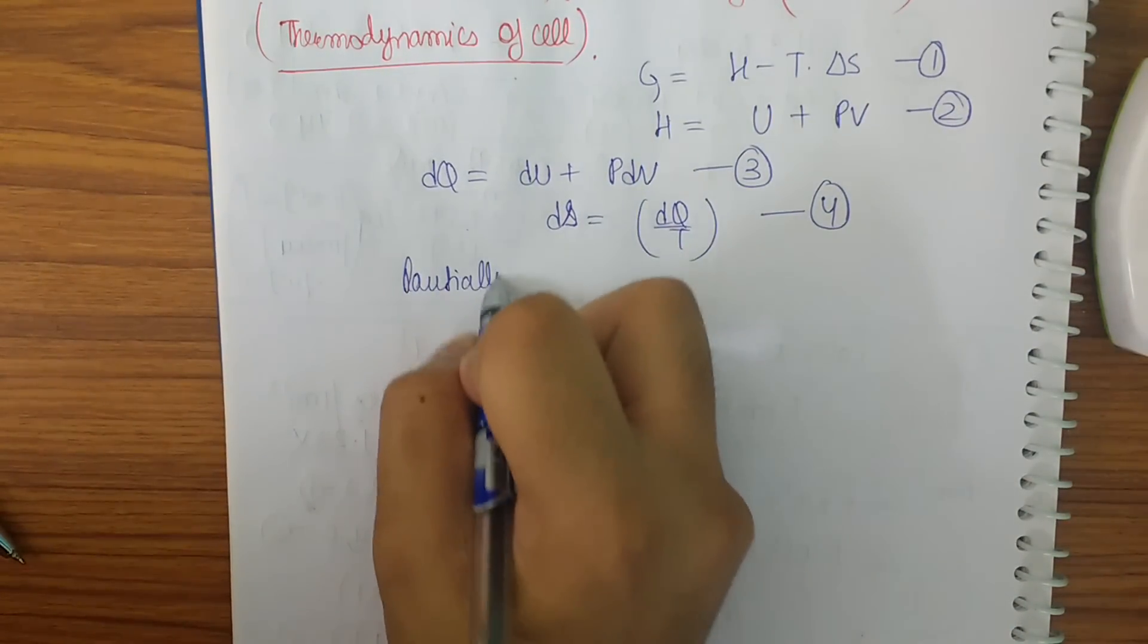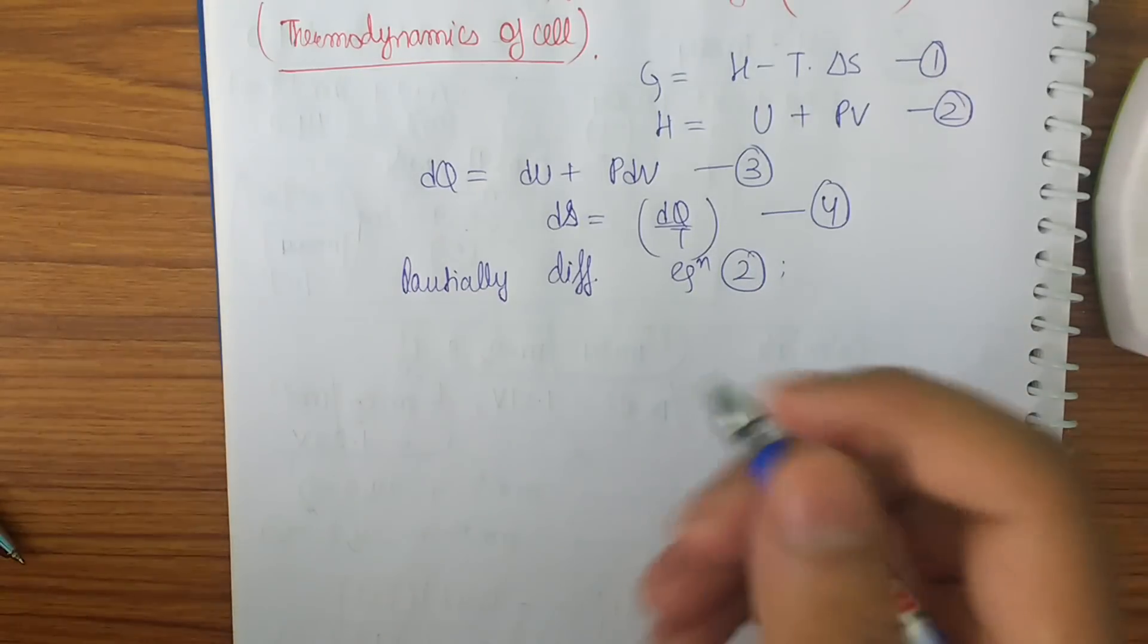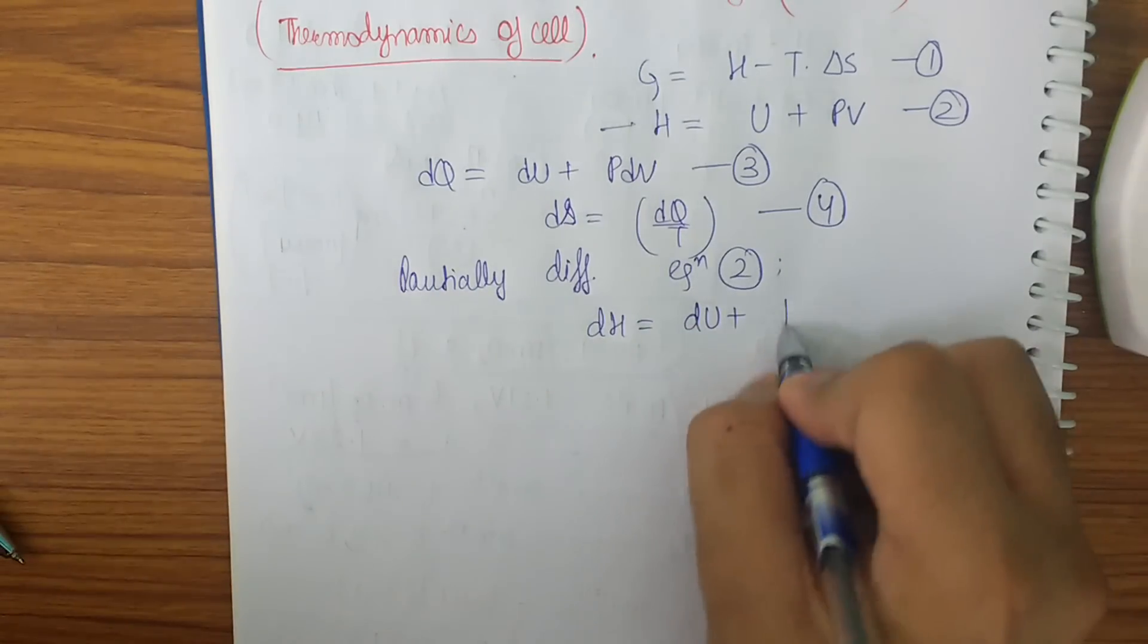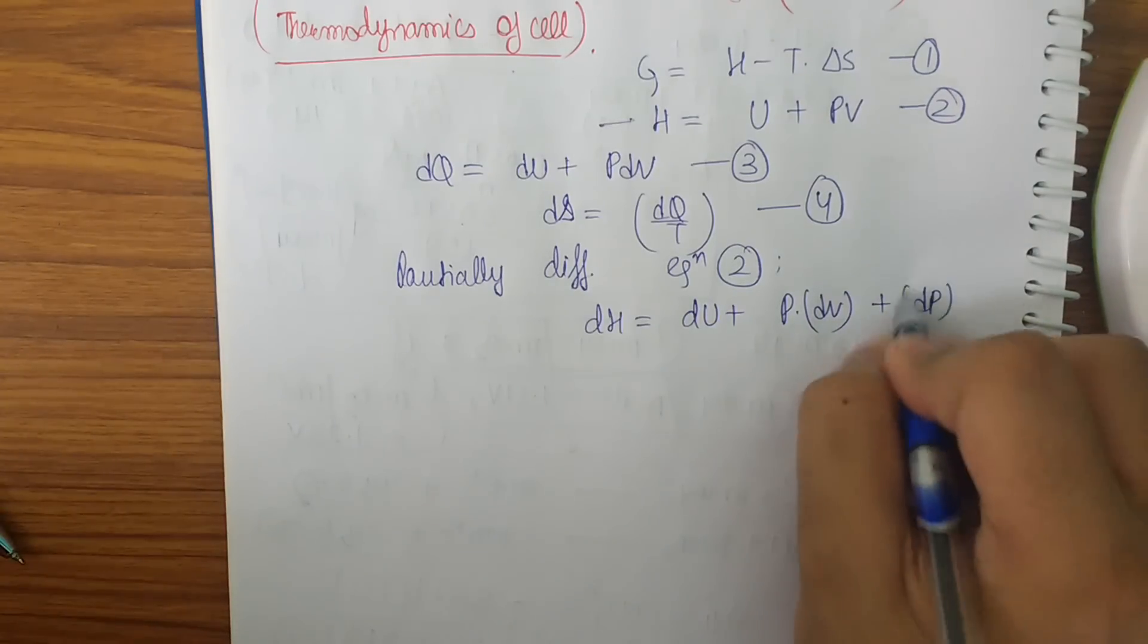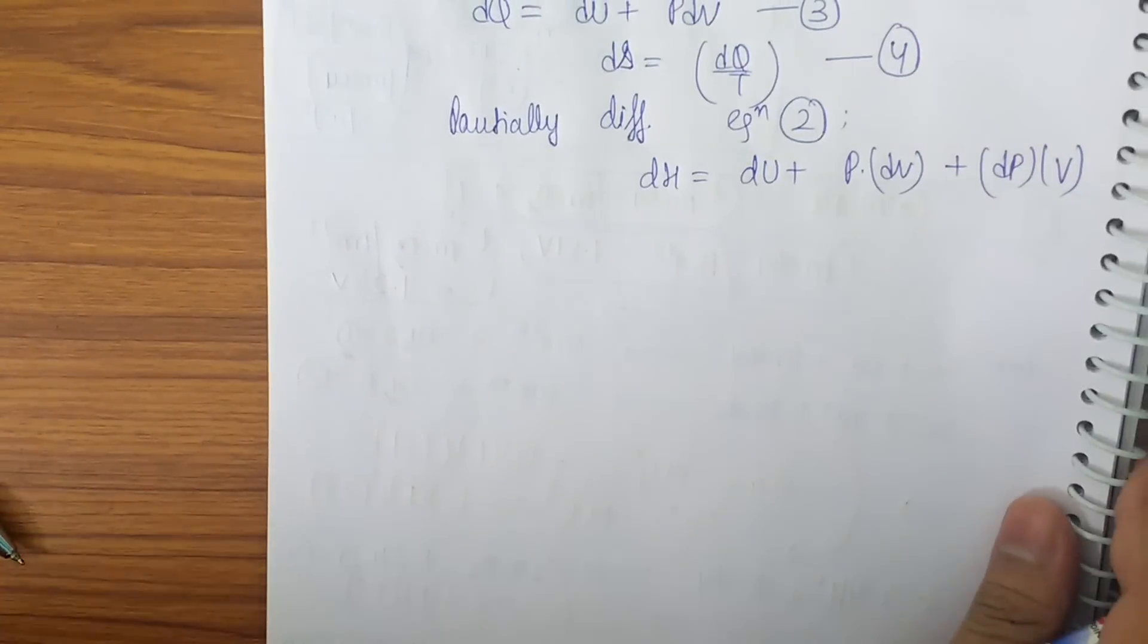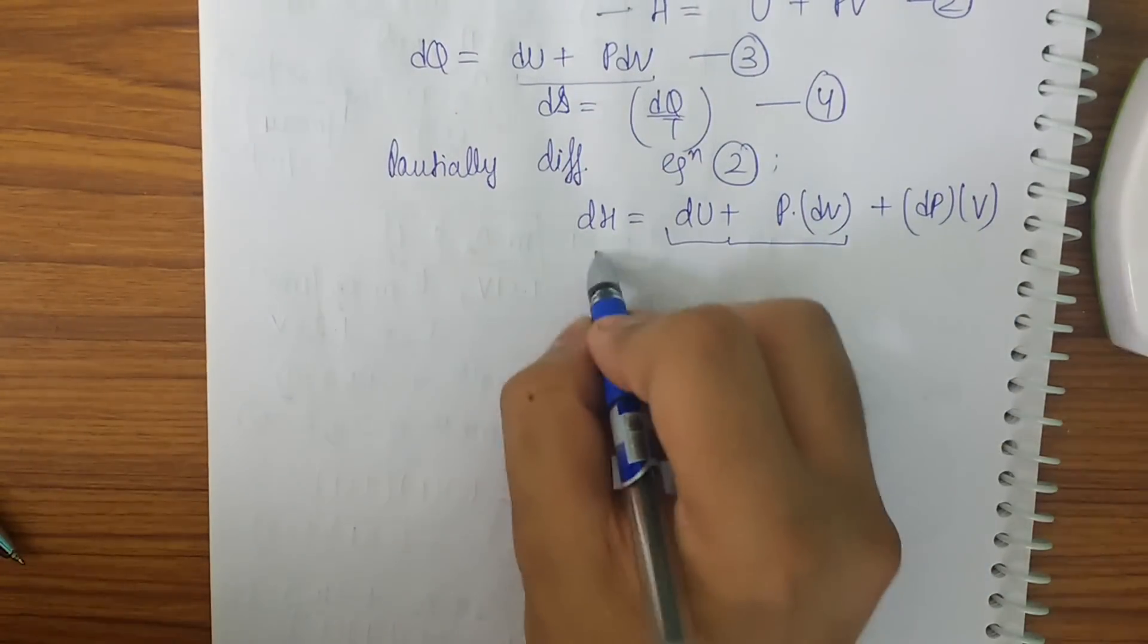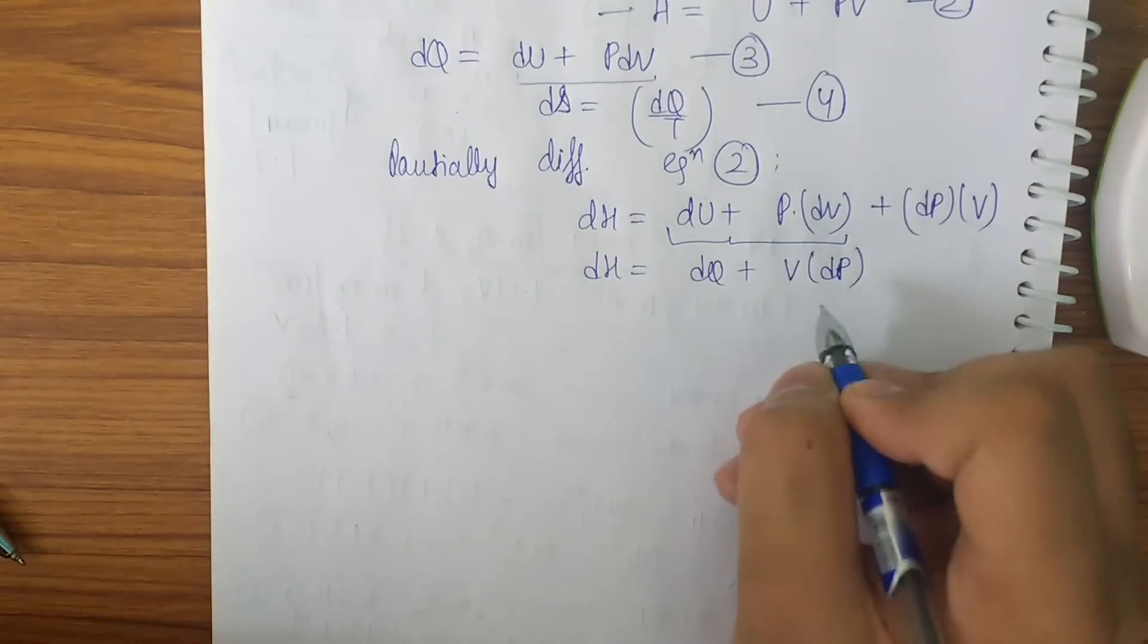Now let's differentiate, partially differentiate equation number two. So I will get DH to be Du plus P into DV when volume is variable plus DP into V. This is a very easy equation. Now what we can do further is to replace the things. From equation number three we know that Du plus PDV is DQ. So DH will be DQ plus V into DP.